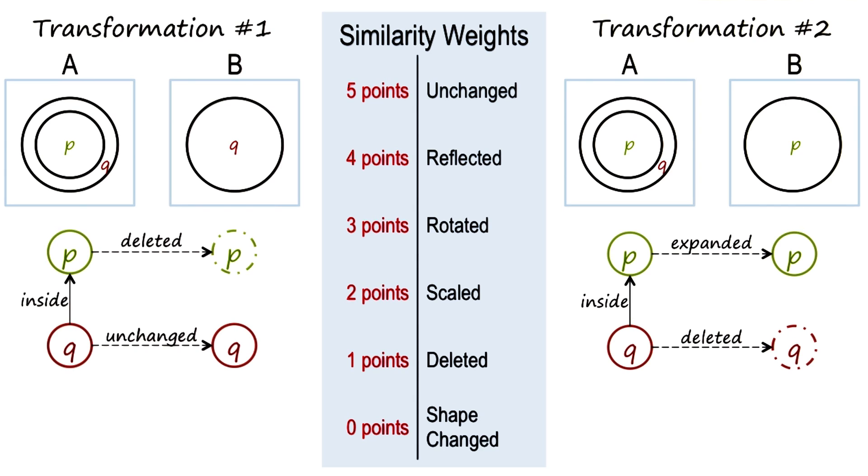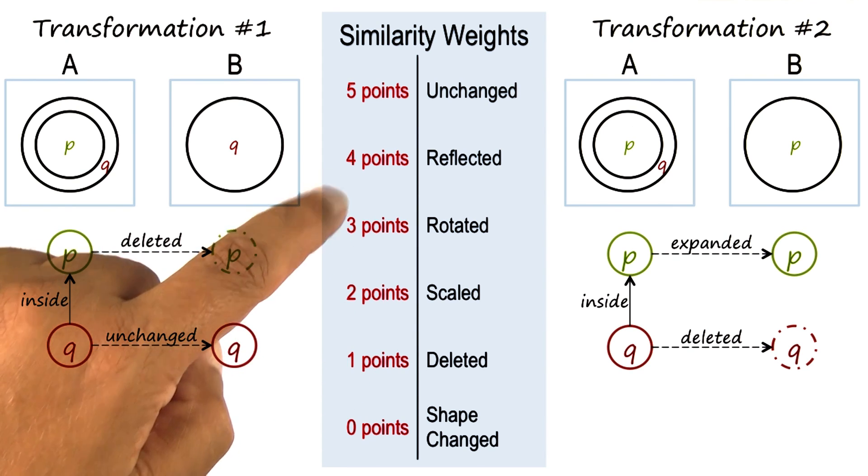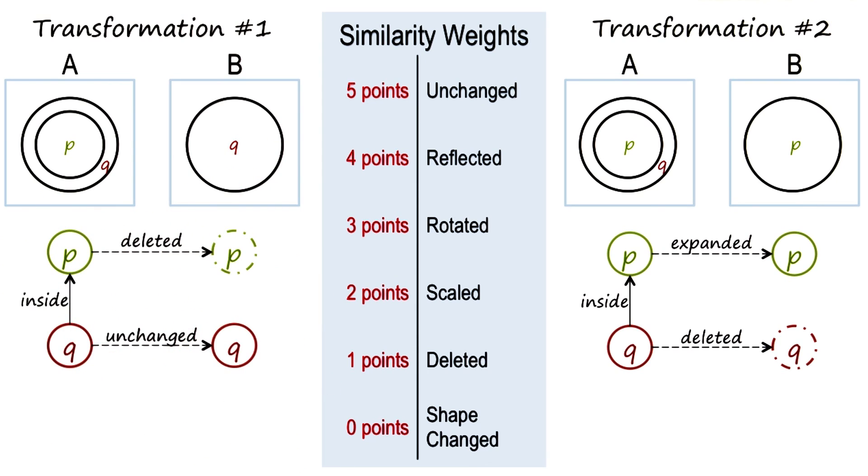Let us suppose that the AI agent had a metric by which it could decide upon the ease of transformation from A to B. Let us suppose that that metric assign different weights to different kind of transformations. You will notice that these transformations like scaling, rotation, reflection, make for affine transformations.